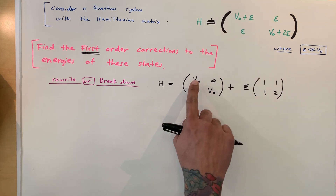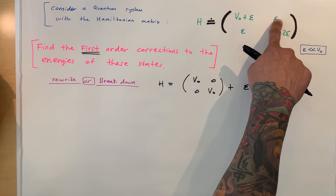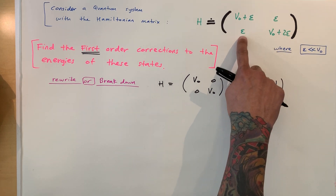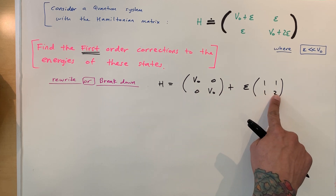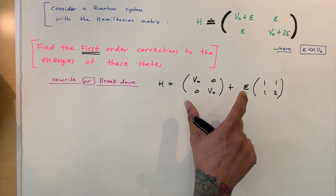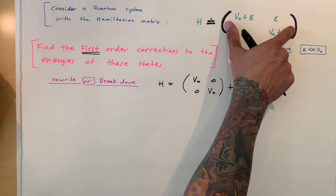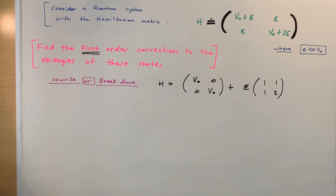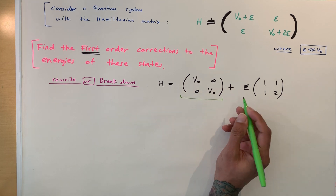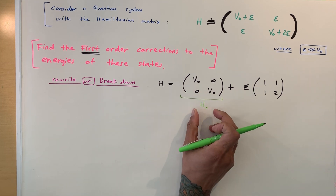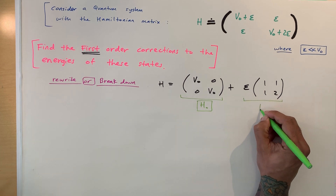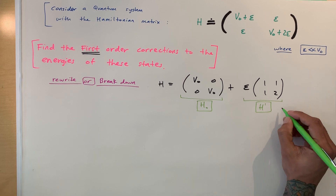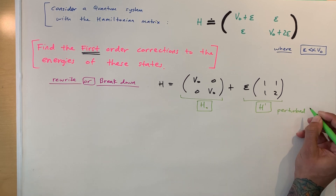If we add the two matrices together: V-naught plus epsilon on the first diagonal entry, epsilon on the off-diagonals (since the zero entries just become epsilon), and V-naught plus two-epsilon on the lower diagonal. This is the breakdown of the full Hamiltonian. The first matrix is the unperturbed Hamiltonian H₀, and the second matrix is H-prime, the perturbed Hamiltonian.